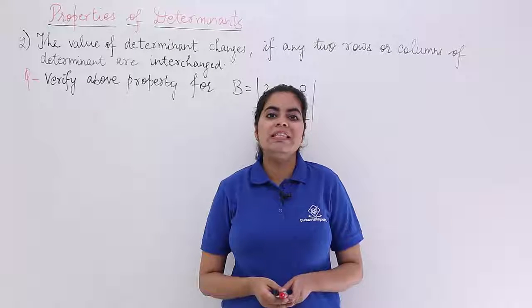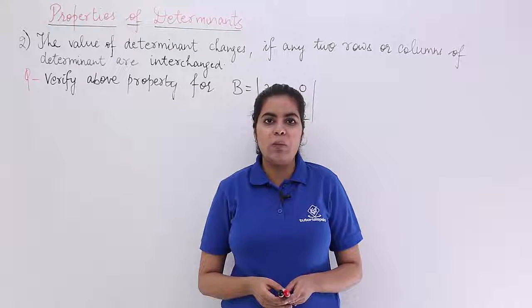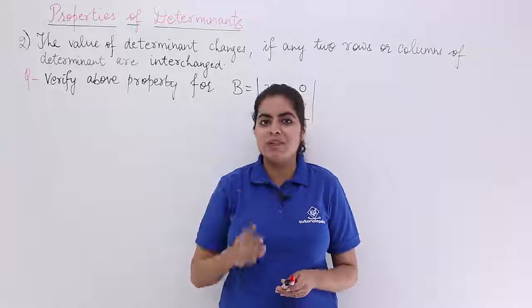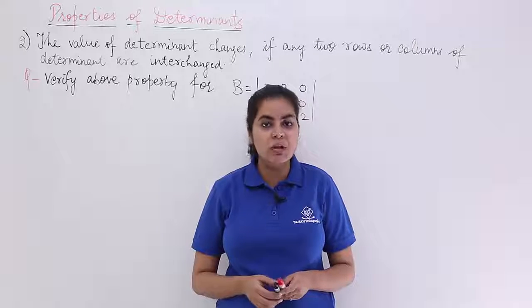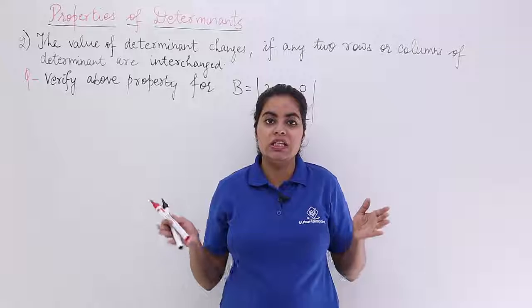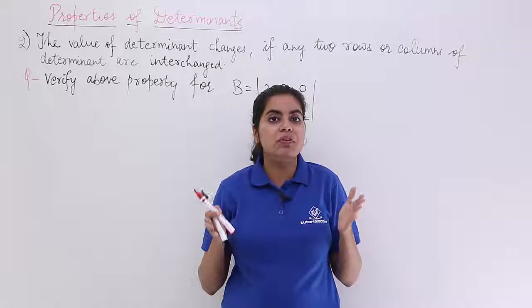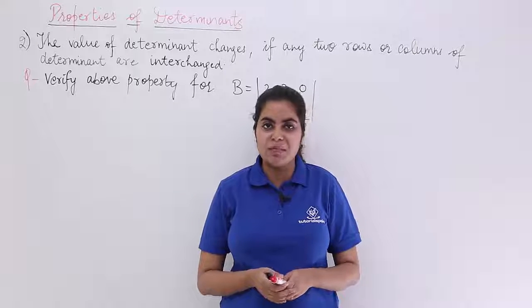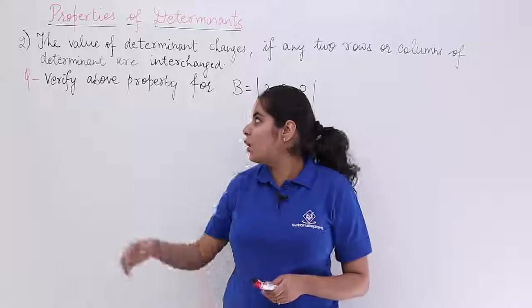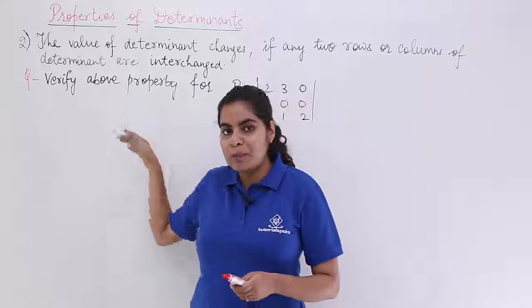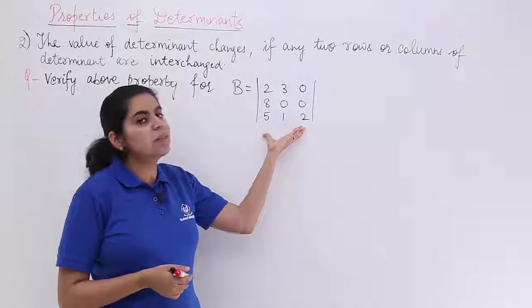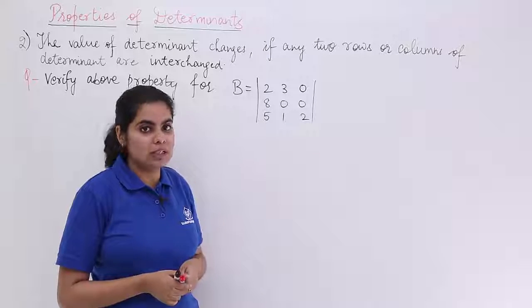In this video let's see a numerical problem based on property number 2 that we studied in the previous video — that the value of the determinant changes if the rows and columns of a determinant are interchanged. We have a problem: verify property number 2 for determinant B.